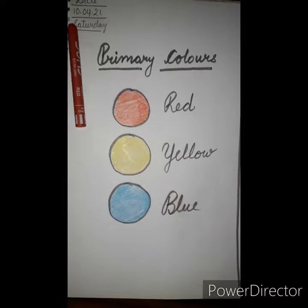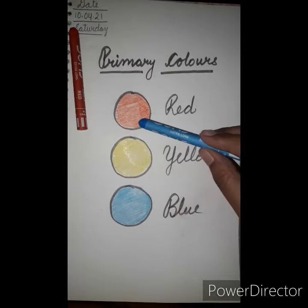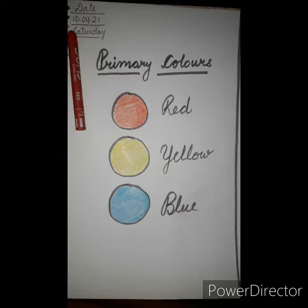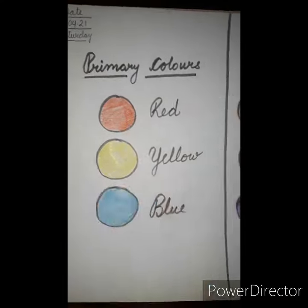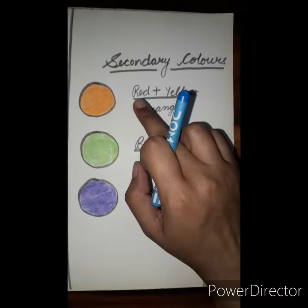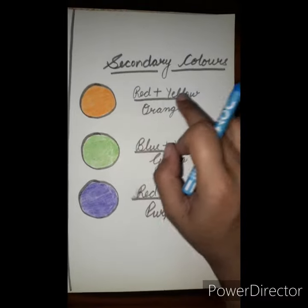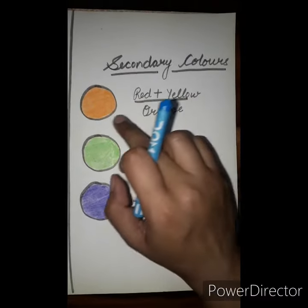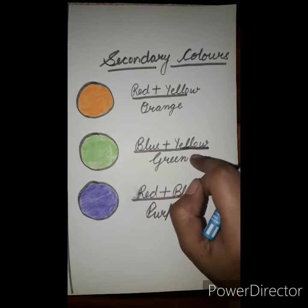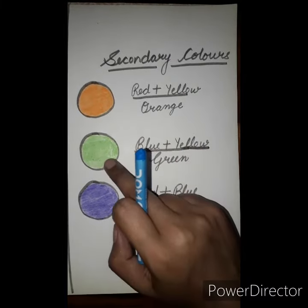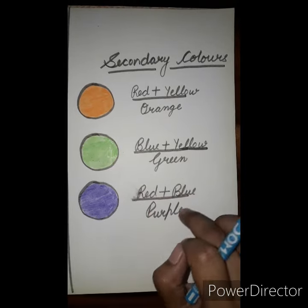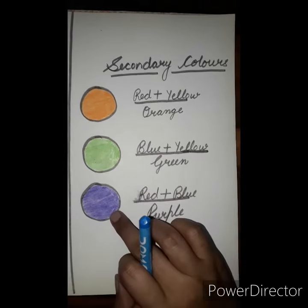So red, yellow and blue are your primary colors. Now, next is secondary colors. When we mix red and yellow, we get orange color. When we mix blue and yellow, we get green color. And when we mix red and blue, we get purple color.